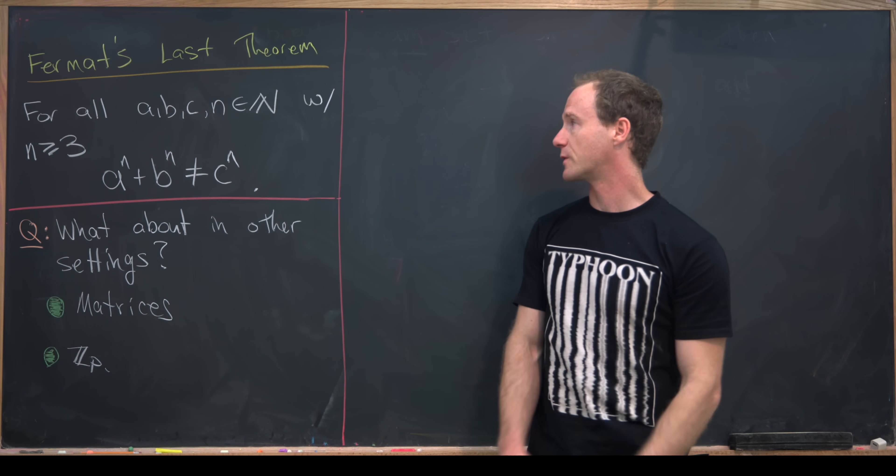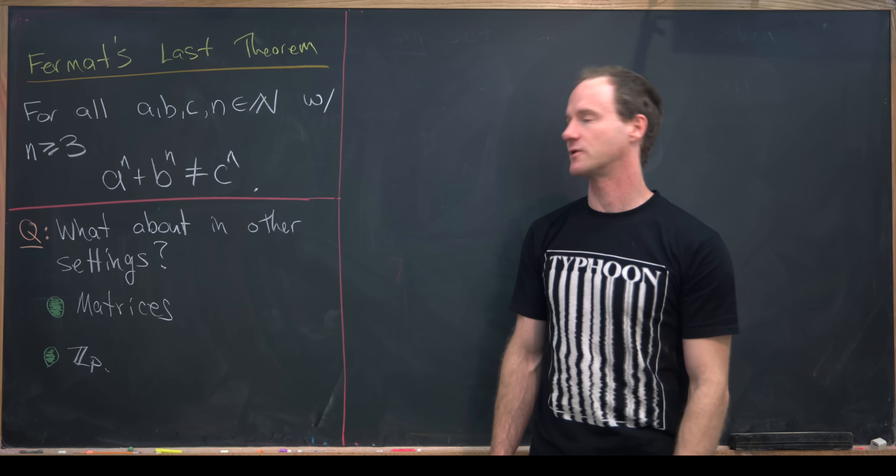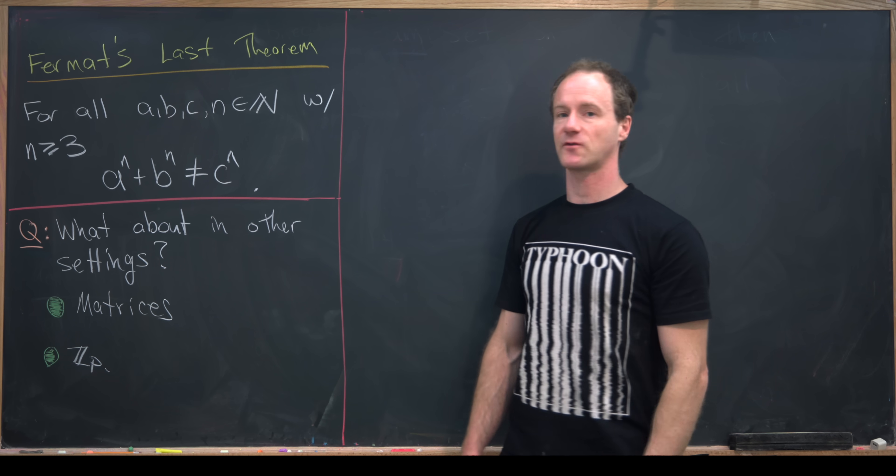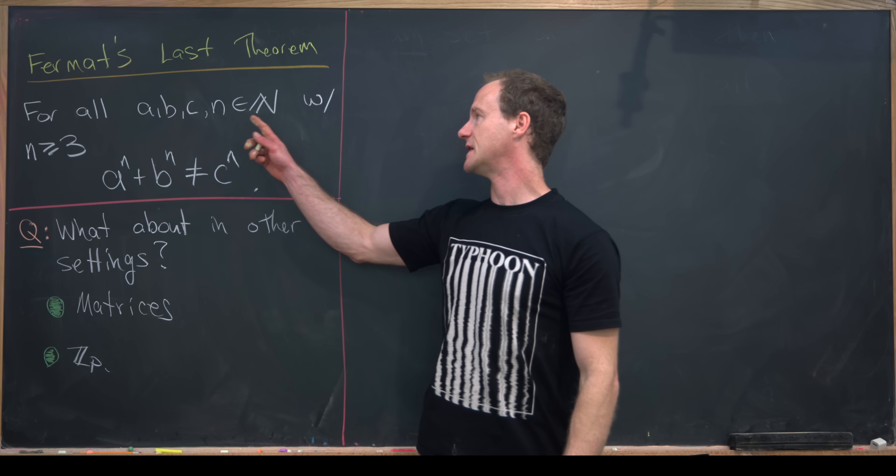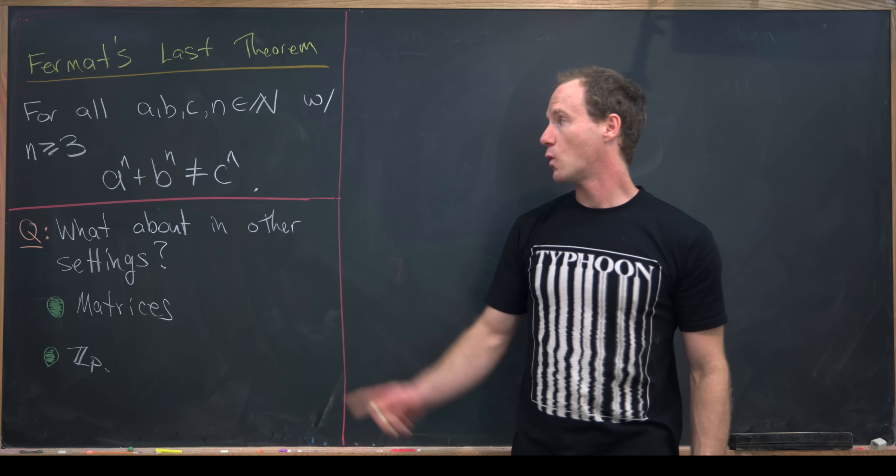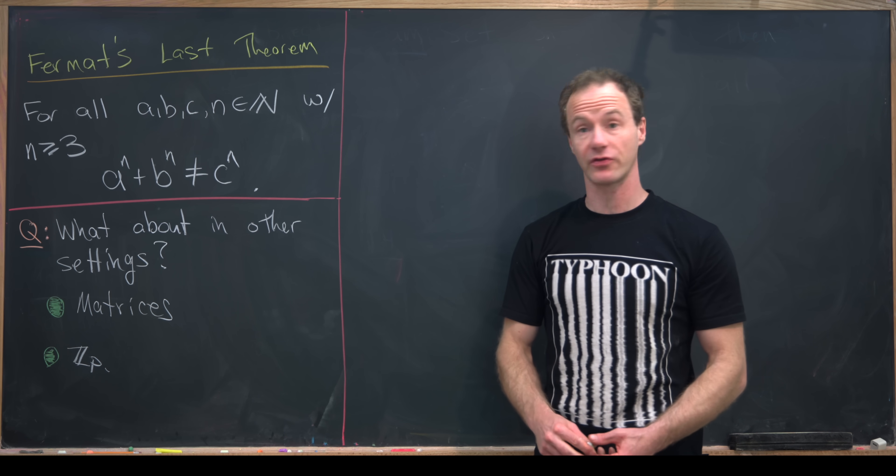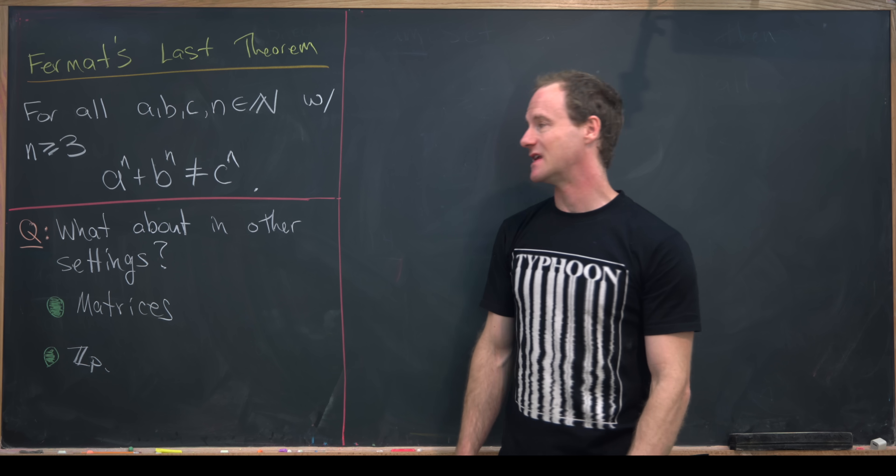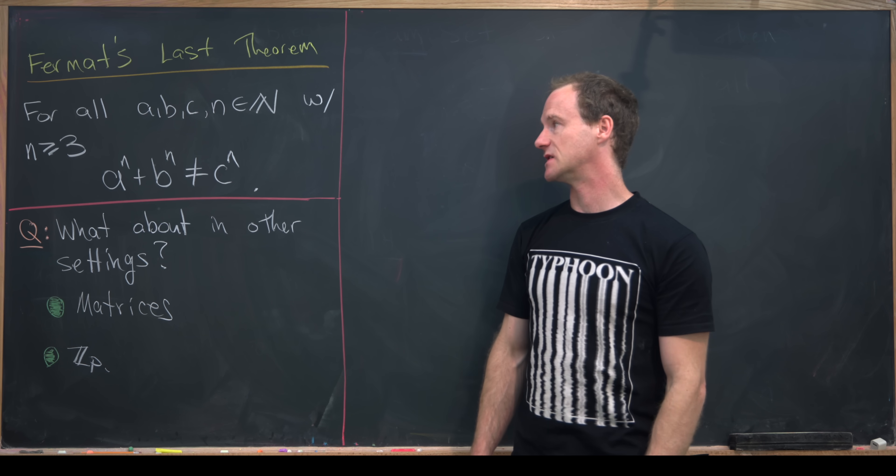So everyone's probably familiar with the famous Fermat's Last Theorem, which says for all natural numbers a, b, c, and n, where n is bigger than or equal to 3, we know that a to the n plus b to the n is not equal to c to the n.